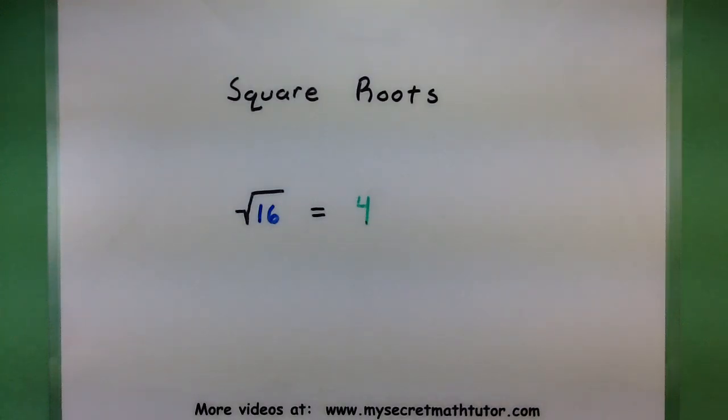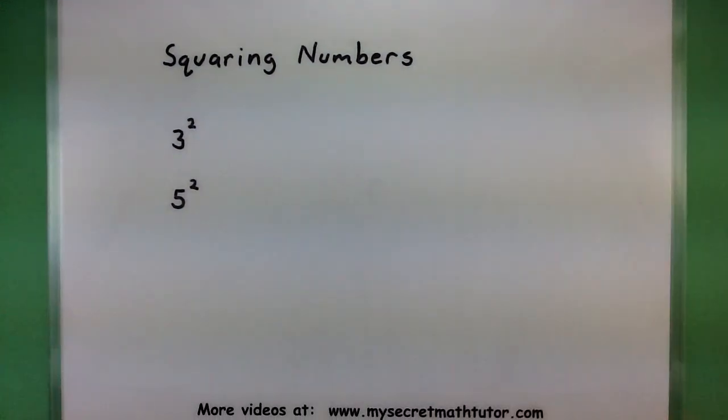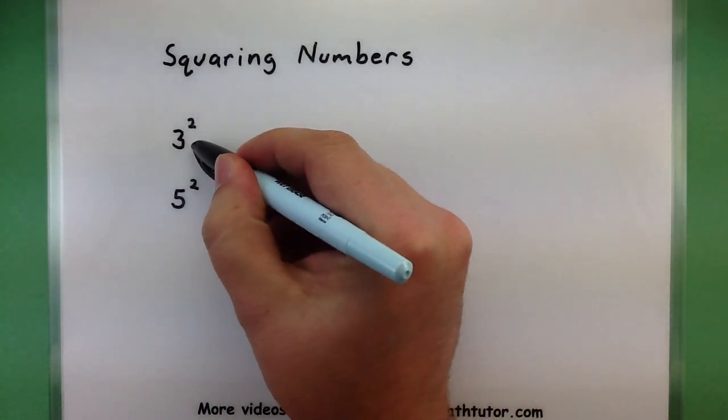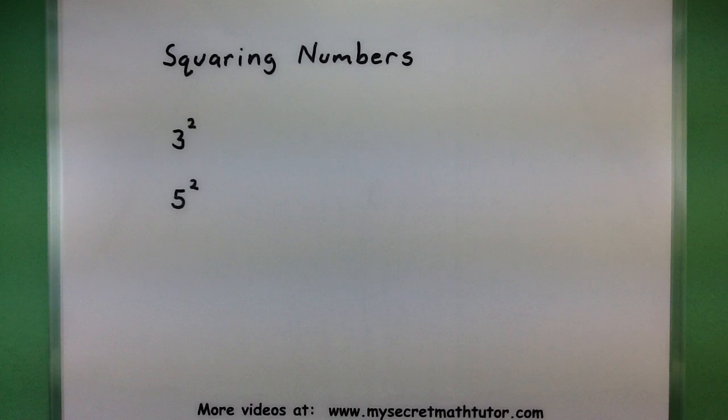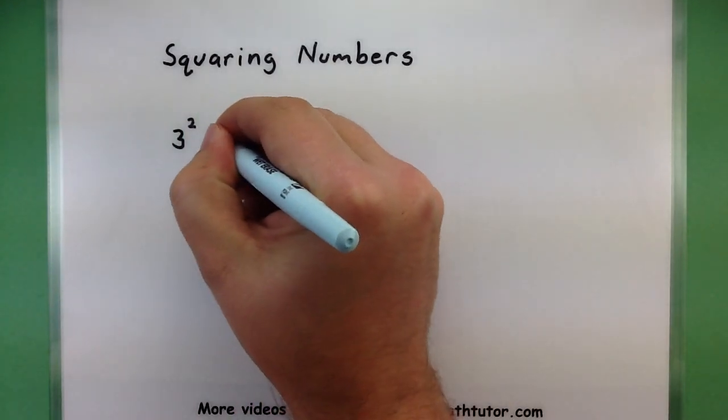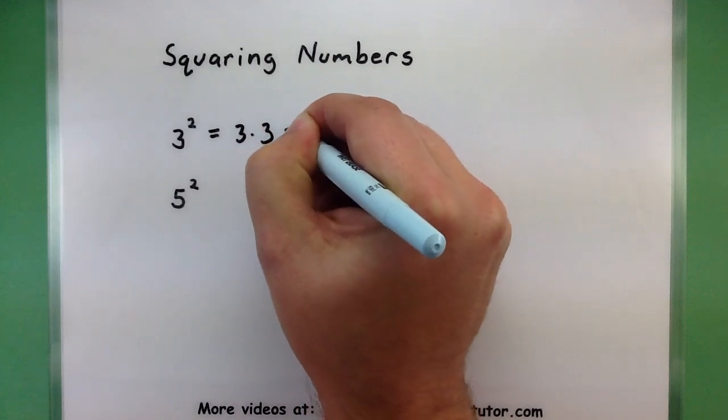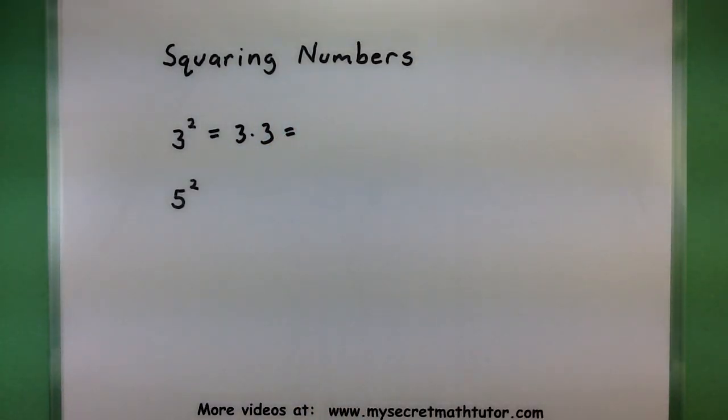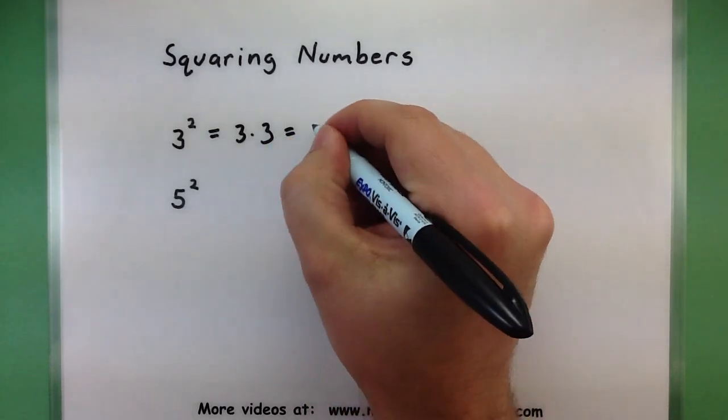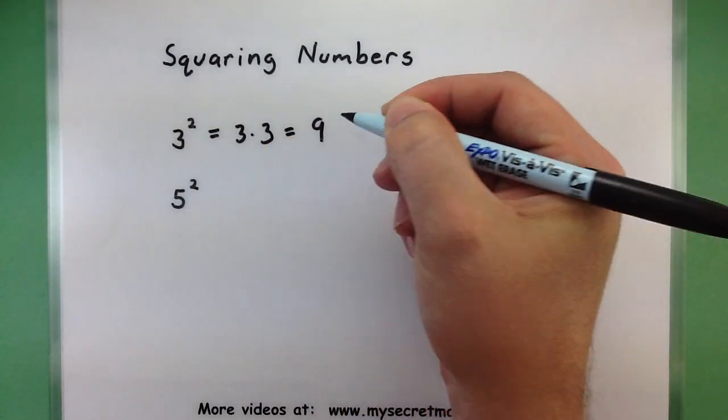Well the key to really understanding something like a square root is really understanding the squaring process. So for a moment we're just going to take numbers and square them. When you have a number, say 3, and you square it or raise it to the power of 2, what you're really saying here is that you're taking 3 and you're multiplying it by itself. Now the multiplication process is usually a little bit more familiar. So 3 times 3, this would give us a number like 9.